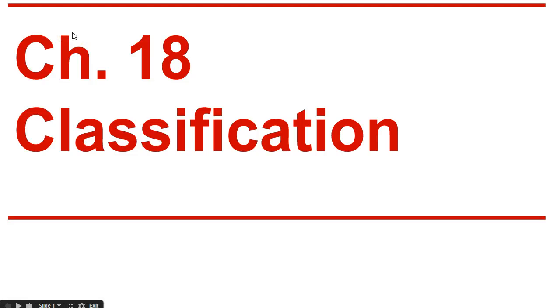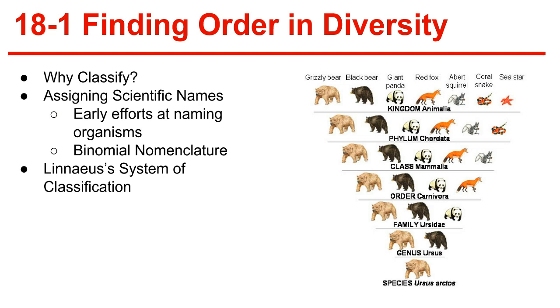Hello, and welcome back to the Prentiss Hall Biology Textbook. Today we'll be covering Chapter 18, Classification. 18-1, Finding Order and Diversity.